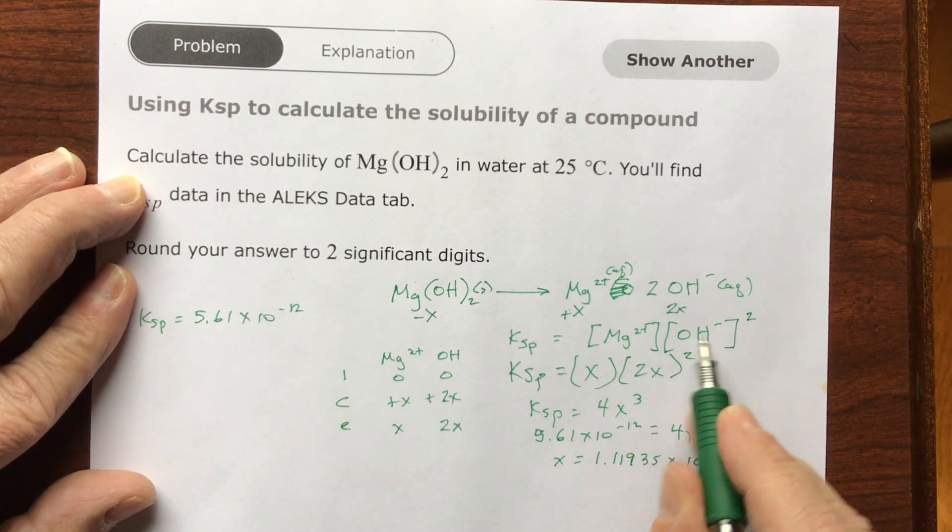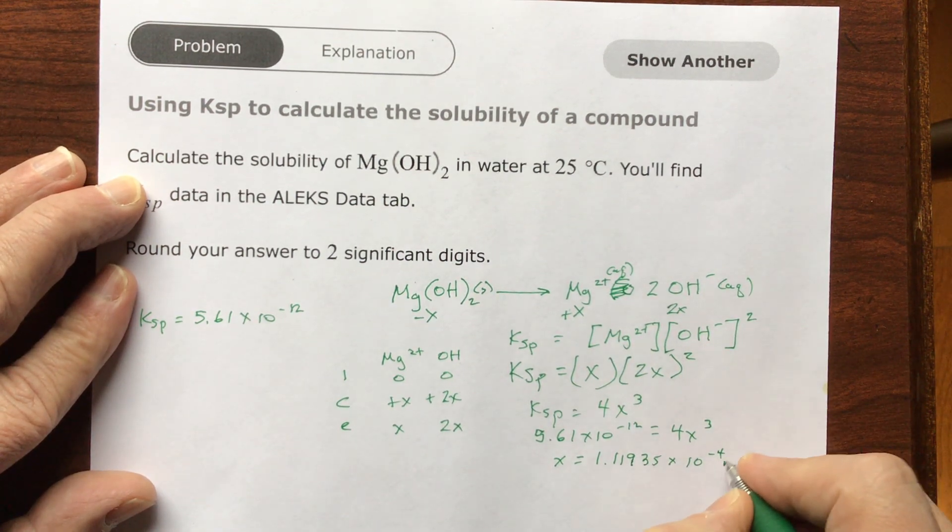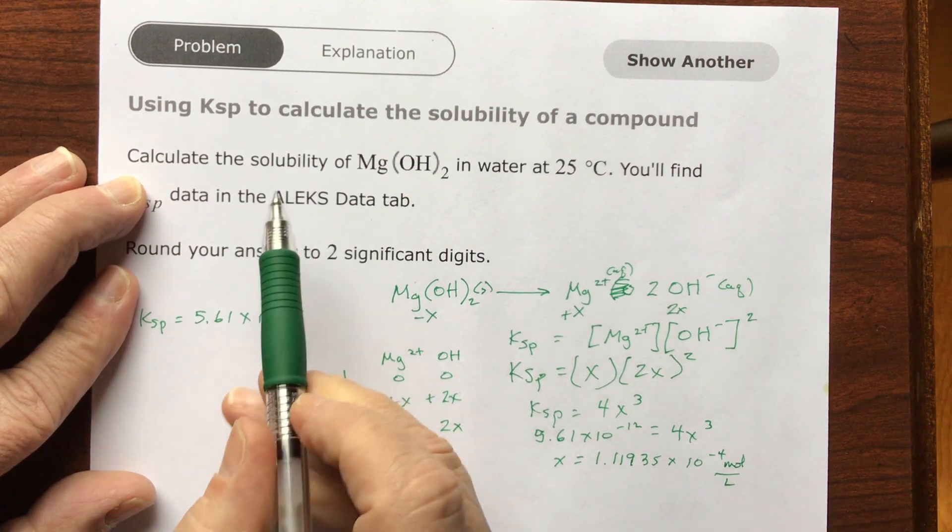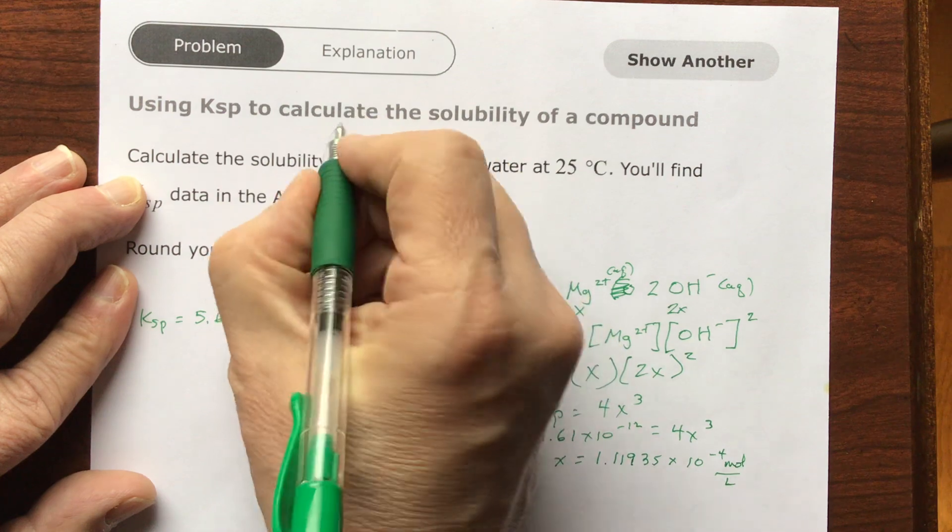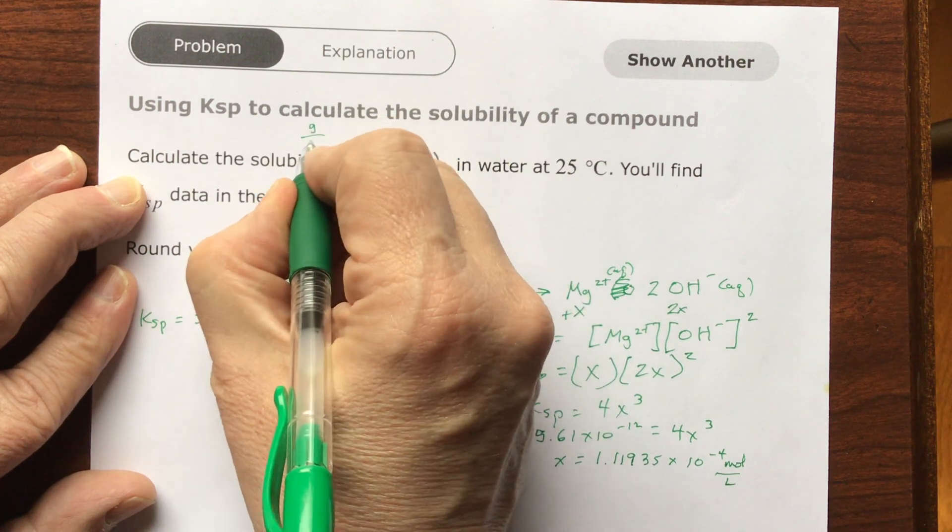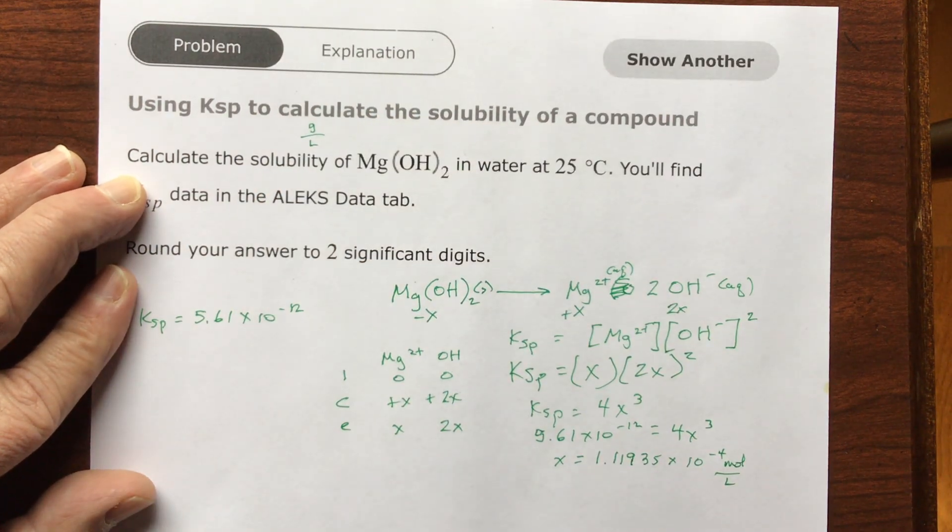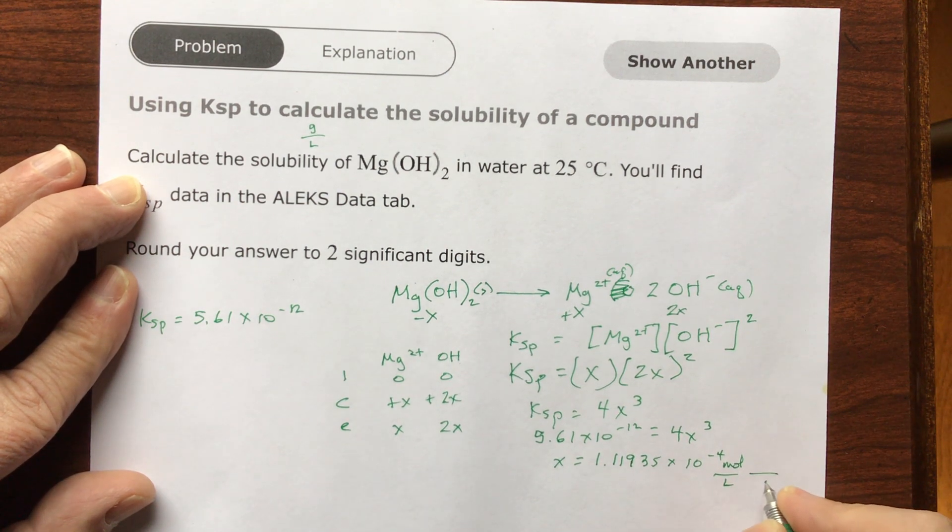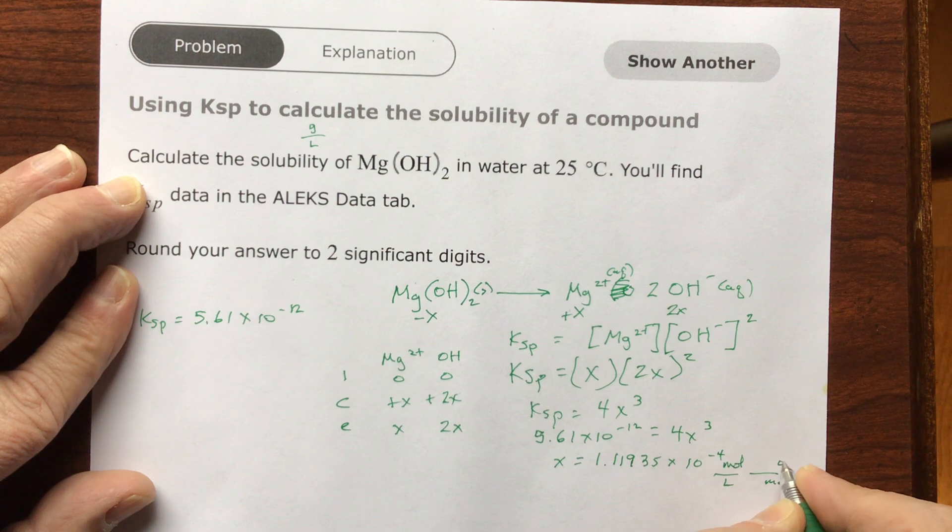Now this is molarity, and molarity is moles over liters. But they're asked for the solubility, and the solubility is how many grams dissolve in a liter. How many grams of the powder will dissolve in it? So I need to get rid of moles and go to grams.